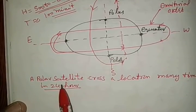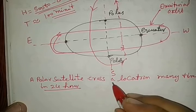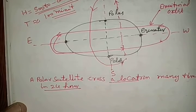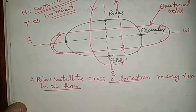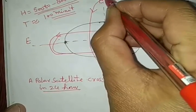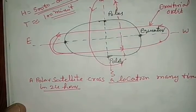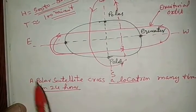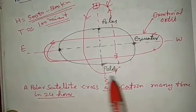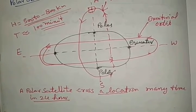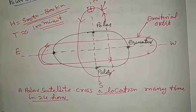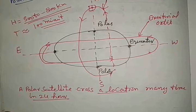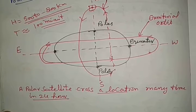That is why a polar satellite crosses a given location many times in 24 hours. If a camera is fitted in the satellite, it takes pictures of clouds, ozone layer, and different locations on the Earth's surface very clearly and in a magnified way.